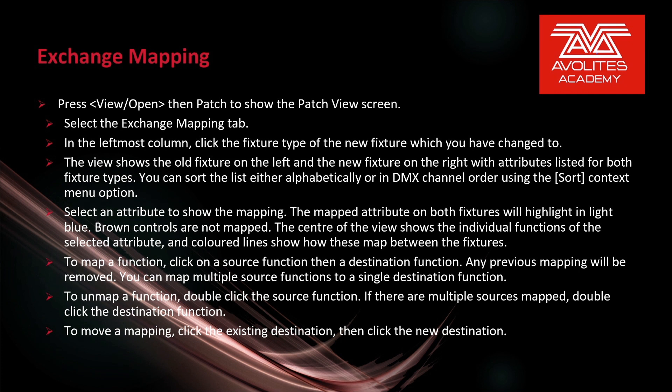To map a function, click on the Source function, then the Destination function. Any previous mapping will be removed. You can map multiple source functions to a single Destination function. To unmap a function, double-click on the Source function. If there are multiple sources mapped, double-click the Destination function.